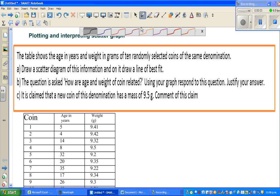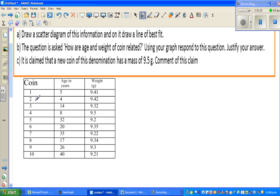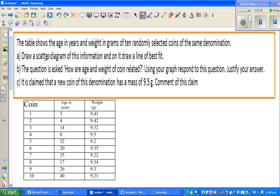Hello, in this video I'm going to do a topic on scattergraph, plotting and interpreting scattergraph. Let's read the question. The table shows the age in years and weight in grams of 10 randomly selected coins of the same denomination. So this is the table, you get 10 randomly selected coins, this is the age in years and this is the weight in grams. So what does the question say? Draw a scattergraph, a scatter diagram of this information and on it draw the line of best fit.